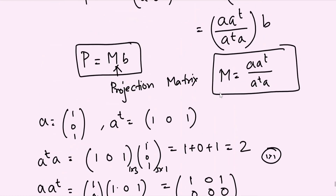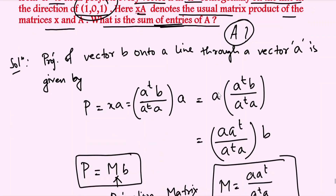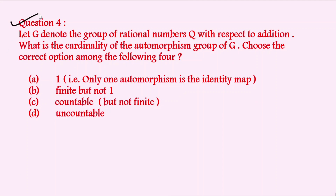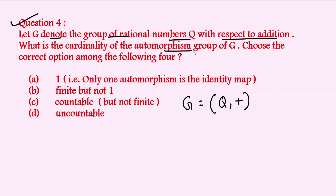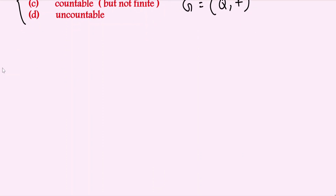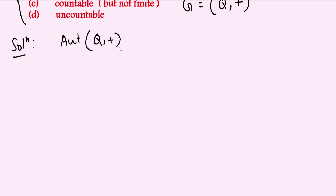The next question is from algebra. Let G denote the group of rational numbers ℚ with respect to addition. We need to find the cardinality of the automorphism group of G, choosing the correct option from four given choices.